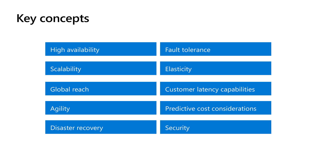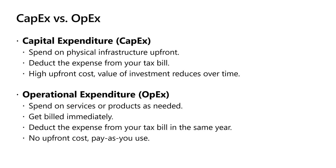Latency is the delay from input into a system to its desired outcome. For an end user, it's the amount of time between when they click on a link and when a website loads. Predictive cost considerations and models are when you take two or even millions of factors to identify combinations of what your cost will be. The major benefit is that using predictive costing, you can determine what your costs will be in the future based upon current and prior consumption. Lastly, security is the state of being free from danger or threat.